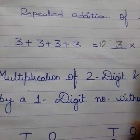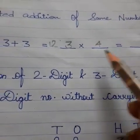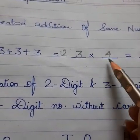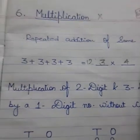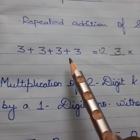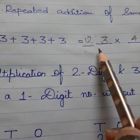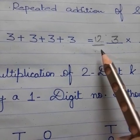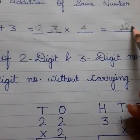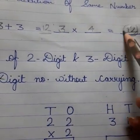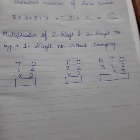The same number is 3, and I have repeated this number 4 times. So we write 3 into 4, which means 3 times 4 equals 12. After the repeated addition, the result is known as the product. This is our product. Now, multiplication of two-digit and three-digit numbers by a one-digit number without carrying.